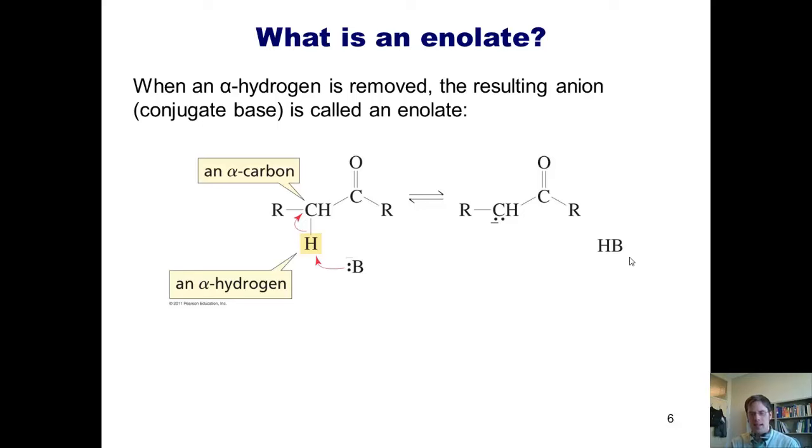An enolate is nothing more than an enol that has a negative charge. This results from a base removing the alpha hydrogen. If I remove the alpha hydrogen, I have a negative charge on the alpha carbon. You'll note that I could draw two resonance structures here. One, shown here, and the other with a double bond being between these two carbons and the negative charge being thrust up onto the oxygen. This kind of compound is called an enolate.